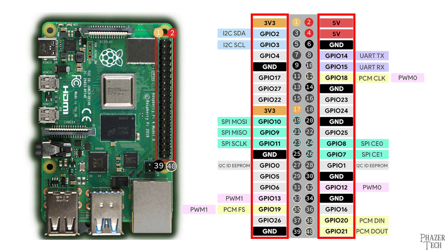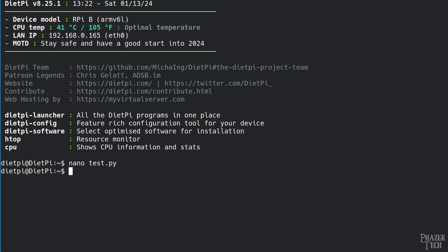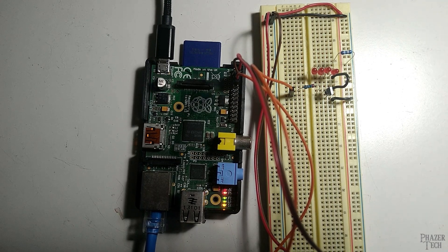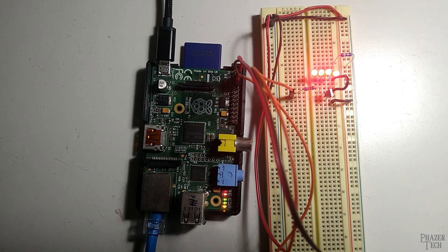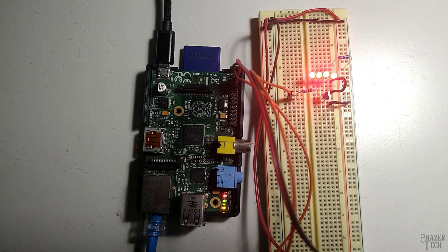The GPIO pins provide general purpose input and output, and can be set to be digital inputs or digital outputs. These pins are rated for 3.3V, so if you set an output pin to ON, you'll get 3.3V from it. The maximum current they can provide is only about 10–15mA. In my previous video I showed how to connect one of these to an external transistor circuit to power an LED, but I didn't show how to use the input pins — that's something I'm also planning to cover in the next video.